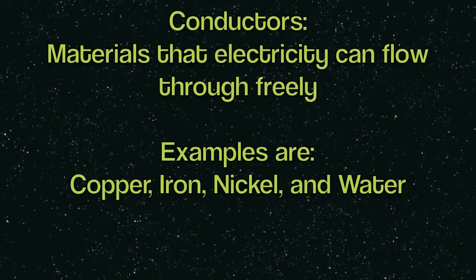Say what? Electricity travels really fast. But it does depend whether it's an insulator or a conductor. A conductor is materials that electricity can flow through freely. Examples are copper, iron, nickel, and water. This copper here is a conductor.